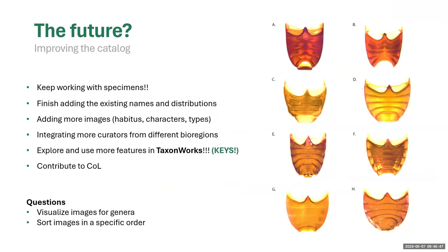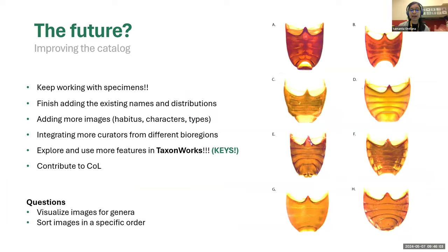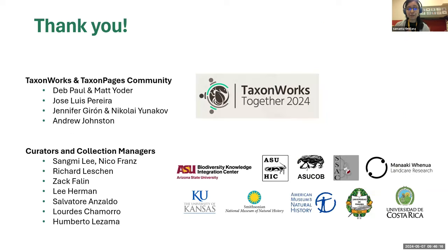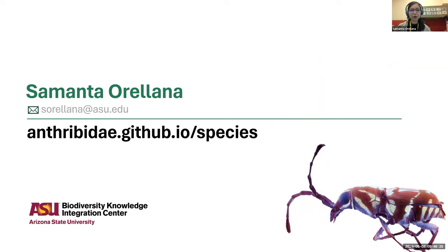For the future, I want to keep working with specimens, finish adding existing names and distributions, add more images including habitus, characters, and types, and hopefully integrate more curators from around the world. I need to keep working on TaxonWorks — I'm just beginning. Now that I see the key feature, I want to make identification keys on TaxonWorks, and maybe also contribute to Catalog of Life. I have some questions for later. Thank you to all the TaxonWorks and TaxonPages community and all the curators who have made specimens available.